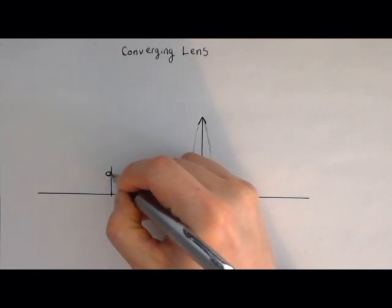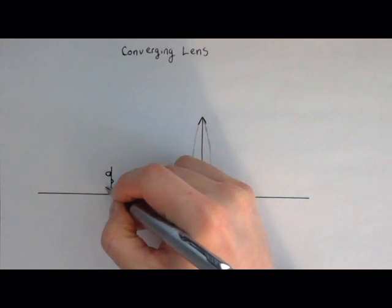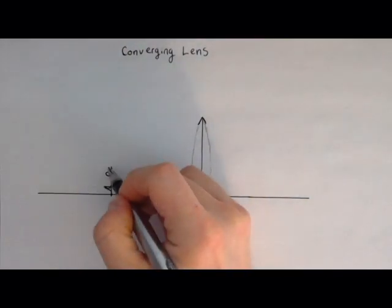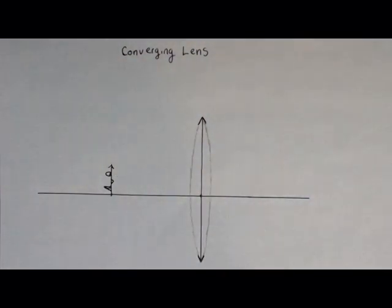So my object is going to be here. It might be a little face or something like that. Again, I'm no artist. Often you'll see people put a little arrow just to help identify which way is up.